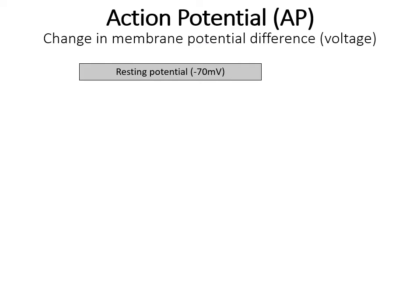We call this sending of the signal down the axon the changing of the polarization of the membrane. We call it an action potential, or just AP for short. This is a change in the membrane potential — the voltage of the membrane itself.